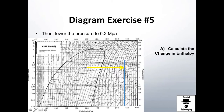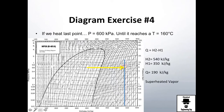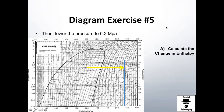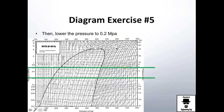Let's continue with problem number five, which is very similar to problem number four. Going back to this point on the diagram — we have this pressure and this temperature, and they are telling me that from this point we want to lower the pressure to this pressure here, and we're going to suppose that it is done at the same temperature. So we lower this pressure to this pressure here.